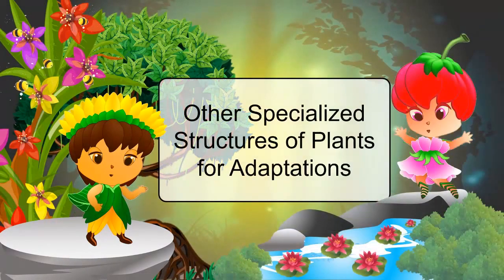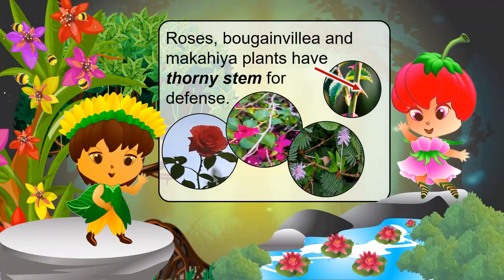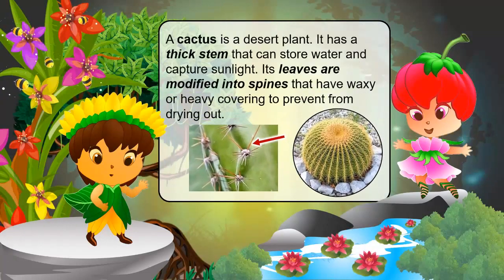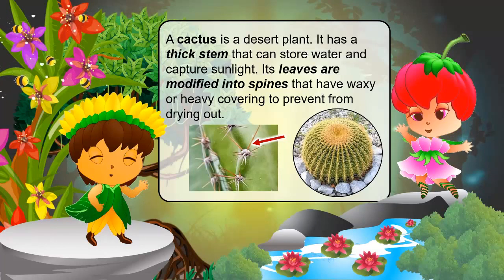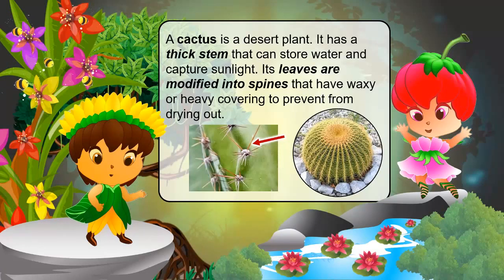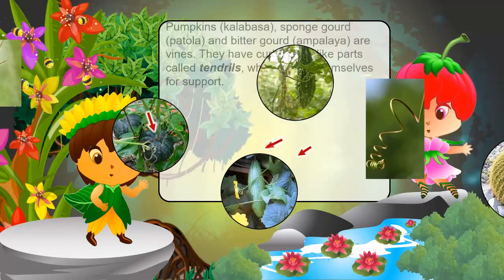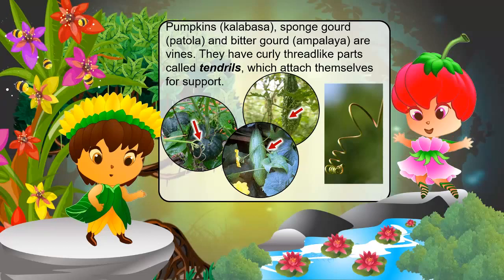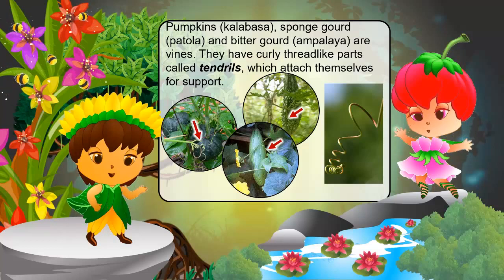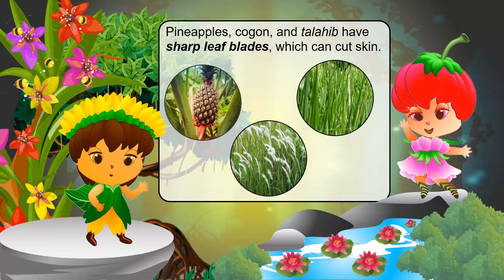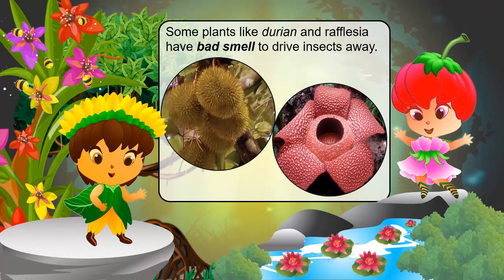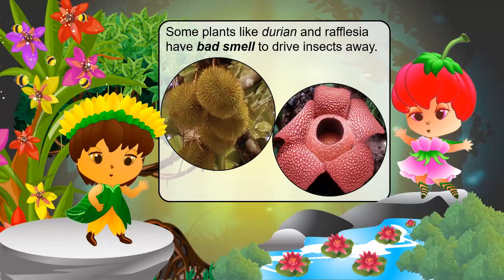Other specialized structures of plants for adaptation: Roses, bougainvillea, and Makahiya plants have thorny stems for defense. A cactus is a desert plant with a thick stem that can store water and capture sunlight. Its leaves are modified into spines that have a waxy or heavy covering to prevent drying out. Pumpkins, sponge gourd, and bitter gourd are vines that have curly thread-like parts called tendrils, which attach themselves for support. Pineapples, cogon, and talahib have sharp leaf blades which can cut skin. Some plants like durian and rafflesia have a bad smell to drive insects away.